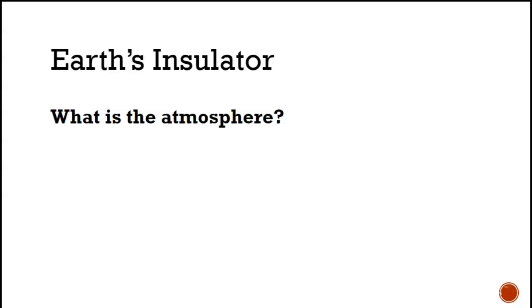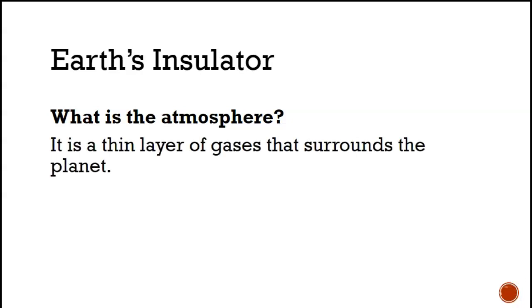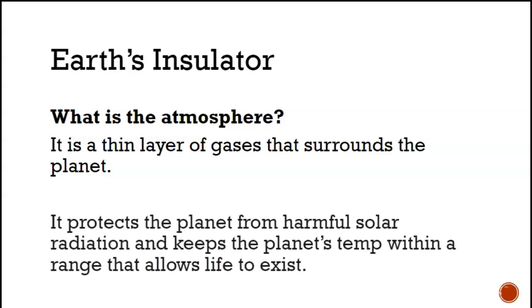Earth's Insulator. What is the atmosphere? It is a thin layer of gases that surrounds the planet. It protects the planet from harmful solar radiation and keeps the planet's temp within a range that allows life to exist. So, the atmosphere is extremely important.